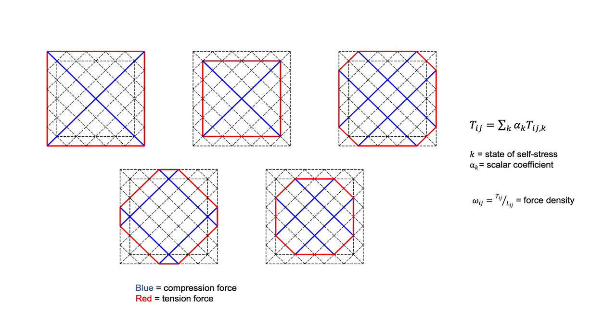So, what are these states of self-stress? We can see them here. Each state of self-stress is essentially a design variable and can be tuned by the designer. The forces in each state of self-stress is shown here as t_ij^k, where k is a state of self-stress and the coefficients alpha_k acts as degrees of freedom of the roof shape.